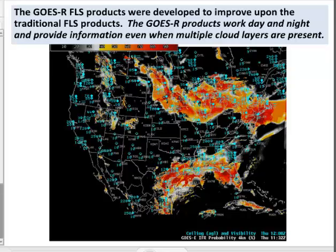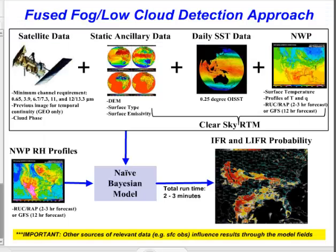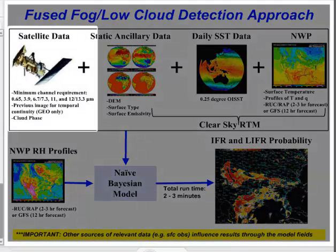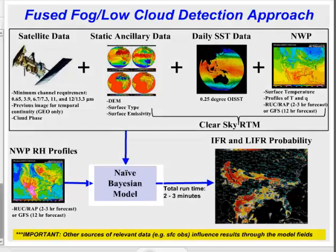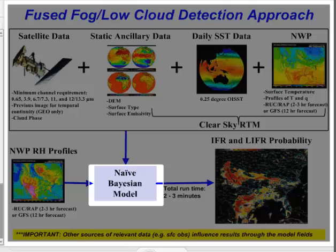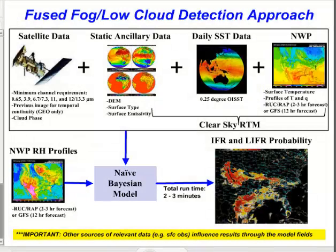What is used to create IFR probability fields? The GOES-R IFR probability is a blended or fused product. It uses all GOES-13 or GOES-15 imager channels, Rapid Refresh model output, daily sea surface temperatures, and static ancillary data such as surface types and surface emissivity. The GOES-R products are then combined using a naive Bayesian model. Satellite predictors differ between day and night — for example, there is no visible imagery at night. Model temperature and moisture profiles from the 2–3 hour, 13-kilometer Rapid Refresh forecast are used over most of North America; otherwise, the GFS is used.